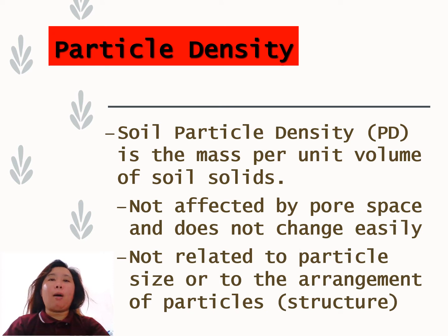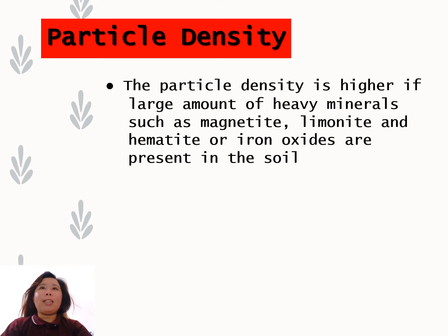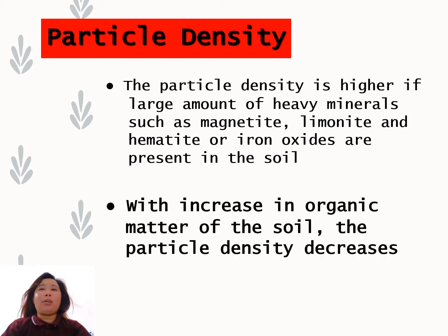Particle density is not related to the particle size, arrangement of particles, or soil structure. The particle density is higher if large amounts of heavy minerals such as magnetite, limonite, and hematite or iron oxides are present in the soil. With increased organic matter content, the particle density decreases. So take note: increasing organic matter means decreasing particle density, or the higher the organic matter, the lower the particle density.